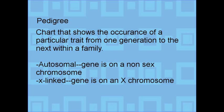A pedigree is a chart that shows the occurrence of a particular trait from one generation to the next within a family. There are two types of pedigrees depending on what trait is being studied. If it is autosomal, then the gene is on a non-sex chromosome — chromosomes 1 through 22. If it is X-linked, then the gene is on the X chromosome.